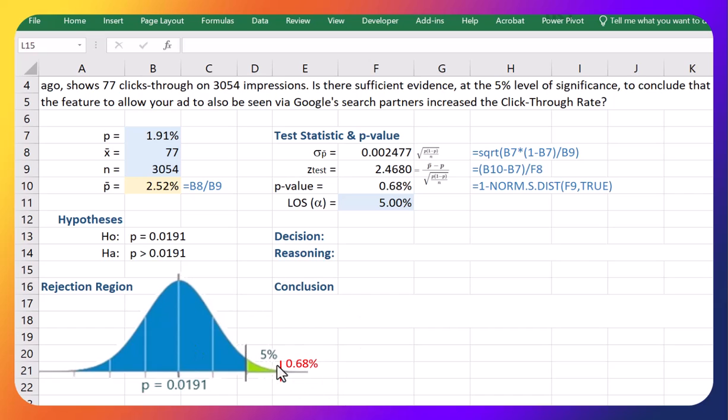And it is high enough, it's way up here. This guy here, this line could be moved even further over. Really it's in the upper 0.68 percent of the graph, that is way up there. Really unlikely that you could get a p-bar of 2.52 percent given that the true proportion is still 1.91 percent.